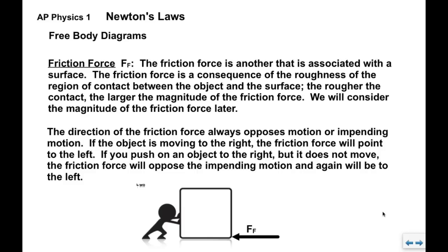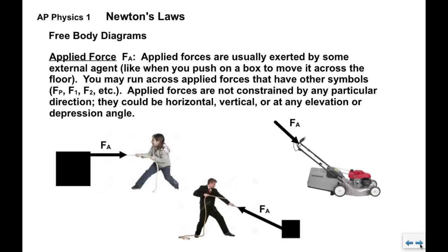So, we say that it opposes motion or impending motion. So, if the object is moving to the right or is attempting to move to the right, the friction force will point to the left. If you push on this object and it doesn't move, the friction force will still oppose the impending motion and it will push back to the left, even if the object doesn't move.